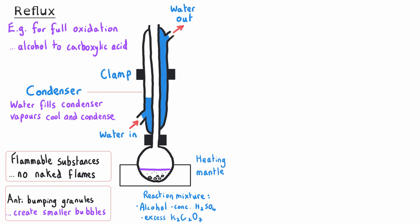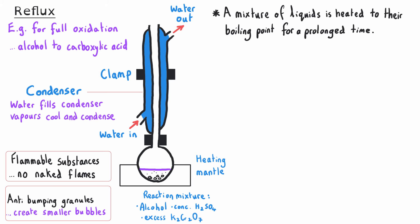If the water went in at the top and out at the bottom, the condenser wouldn't fill properly, so the vapors wouldn't cool as quickly and might escape. This could be potentially hazardous and would certainly decrease our yield. When we carry out a reflux, we take our mixture of liquids and heat them at their boiling points for a prolonged period of time.